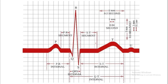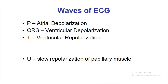Electrocardiogram — we already saw that there are different types of waves, segments, and intervals on the ECG. There is the P wave, the QRS complex, the T wave, and the U wave. There are two segments: PR segment and ST segment, and there are four intervals: PR interval, QRS interval, ST interval, and QT interval.